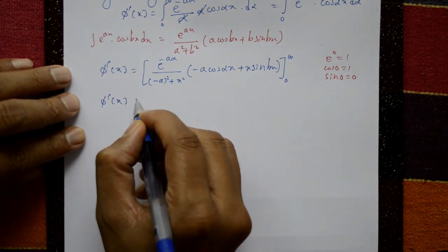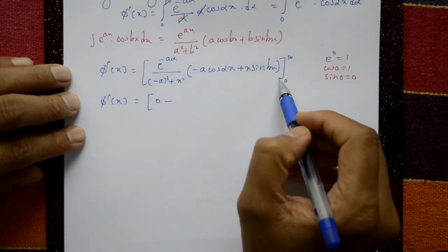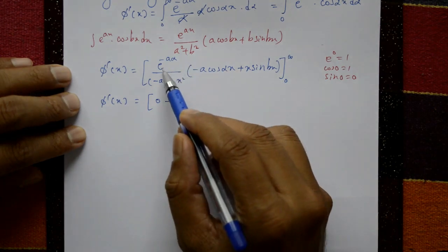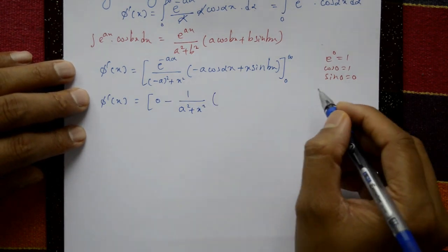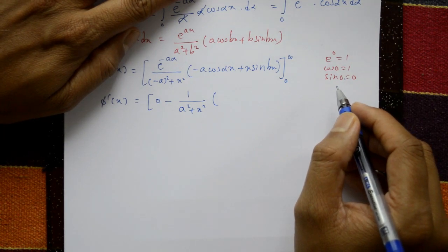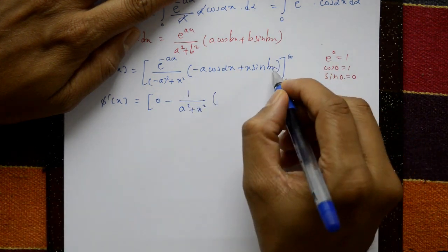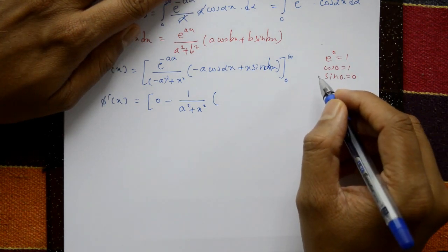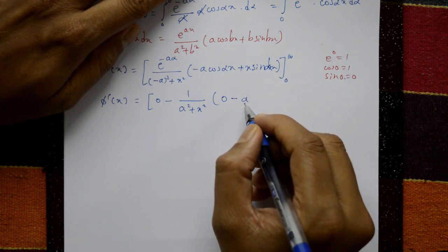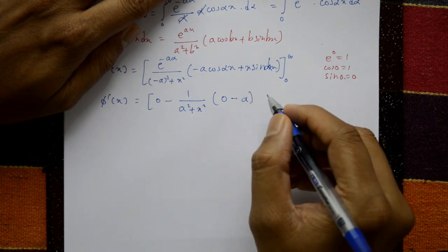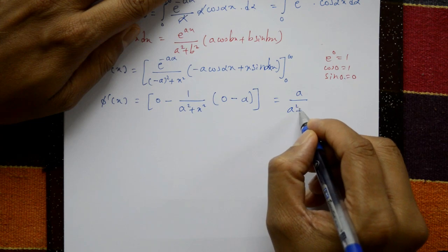Evaluating the limits: the upper limit contributes 0. The lower limit gives −[1/(a² + x²) · (−a·1 + x·0)] = −[−a/(a² + x²)] = a/(a² + x²). Therefore φ'(x) = a/(a² + x²).